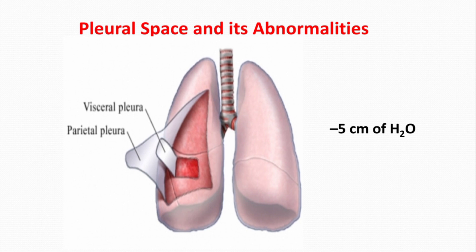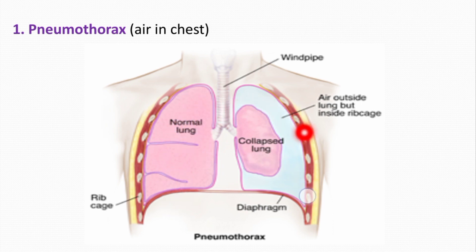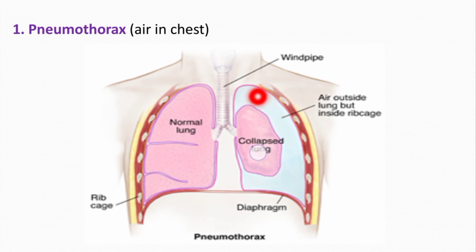We will now talk about the two major abnormalities of the pleural space: pneumothorax and pleural effusion. As you can see here, this is a normal right lung, while in the left lung air has entered the chest cavity — this is called pneumothorax — and because of this air the left lung has collapsed.